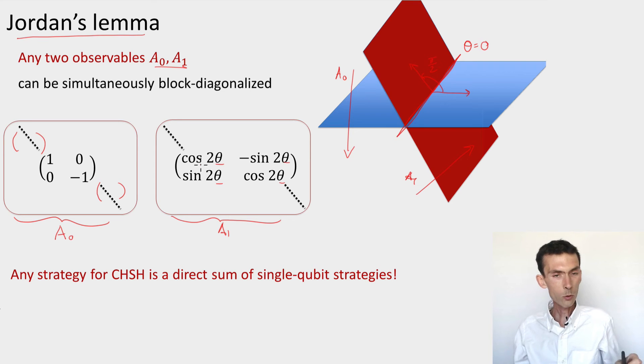What this means is that I can always write these two observables as the direct sum of two-dimensional strategies. I can do the same for Bob, and I can do the same for the states that they share. The consequence is that the whole strategy, whatever it is, even if it uses a very high-dimensional space that I know nothing about a priori, in fact, it really just boils down to a direct sum, meaning an incoherent superposition of single qubit strategies, where Alice has a qubit, Bob has a qubit. This is extremely useful for the analysis, because we had a high-dimensional space, we didn't know what the dimension was, very complicated observables, huge matrices, but in fact, just because there's only two of them at Alice's side, two of them at Bob's side, everything boils down to a two-dimensional analysis.